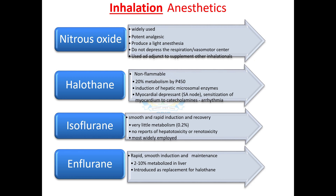Halothane, isoflurane, and enflurane are halogenated liquids. Halothane is 20% metabolized by the P450 enzyme and is a good inducer of the hepatic microsomal system. The major side effect associated with halothane is myocardial depression, which can ultimately lead to arrhythmia. Isoflurane is the most widely employed member of this category, causing smooth and rapid induction and recovery. Very little isoflurane is metabolized in the body and it does not possess hepatotoxicity or nephrotoxicity, making it the safest drug in this category. Enflurane is used to replace halothane when a patient is not responding to it.